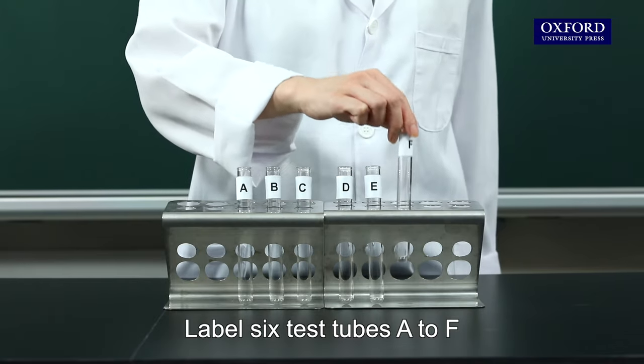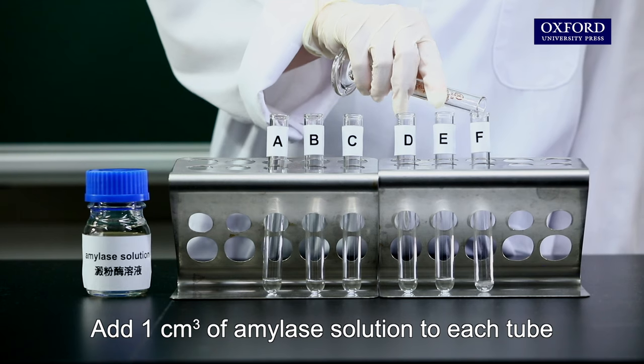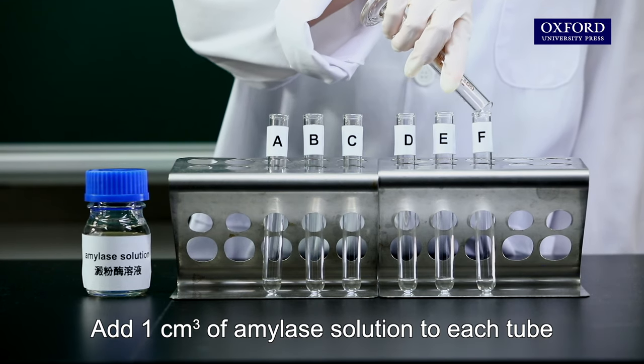Label 6 test tubes A to F. Add 1 cubic centimeter of amylase solution to each tube.